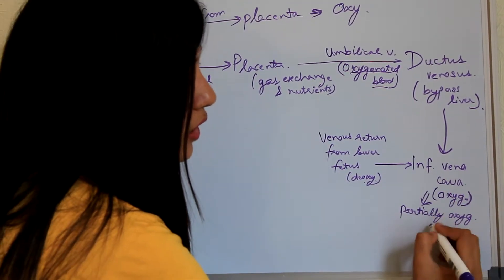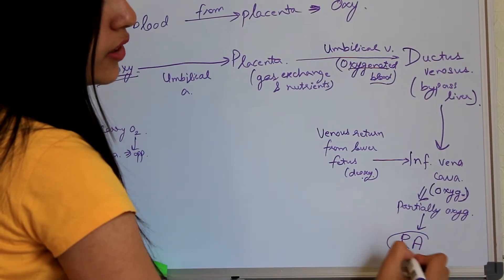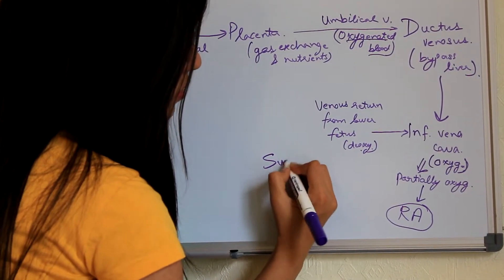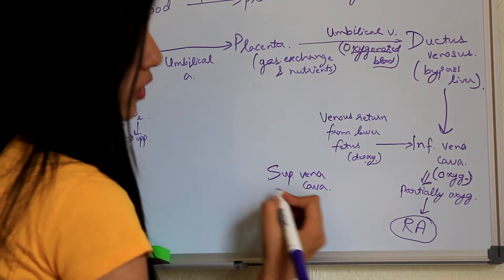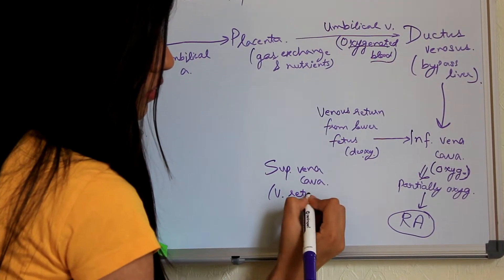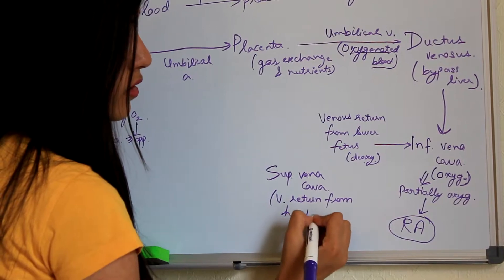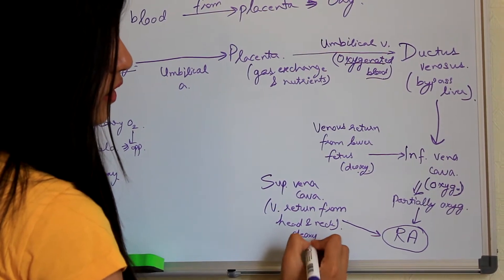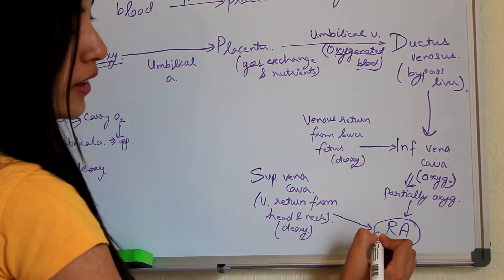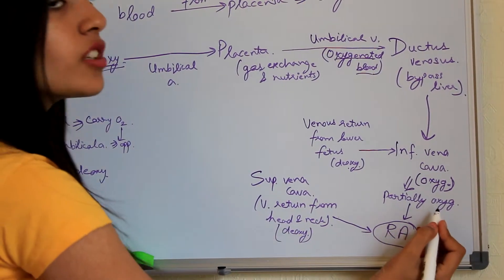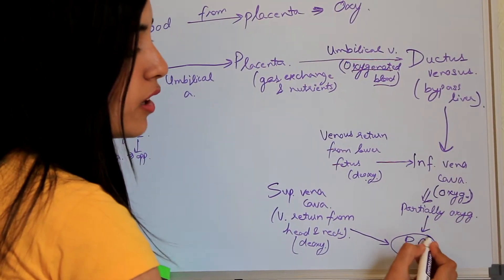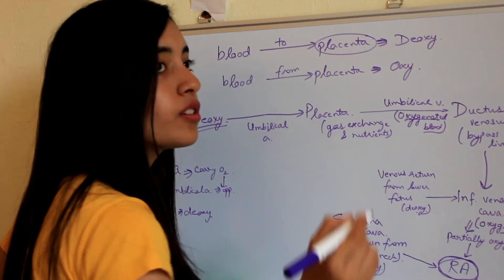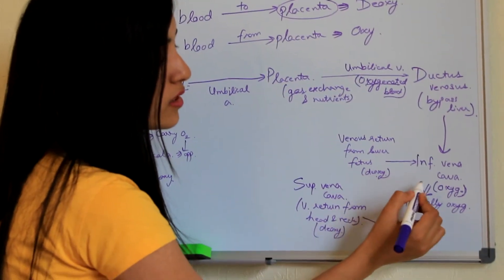After the inferior vena cava, the blood will go to the right atrium. But in the right atrium, blood also comes from the superior vena cava, which is the venous return from the head and neck of the fetus, and this is deoxygenated. So only deoxygenated blood comes to the right atrium from the superior vena cava, while partially oxygenated blood comes from the inferior vena cava. These two different types of blood enter the right atrium but go to the aorta in different ways.